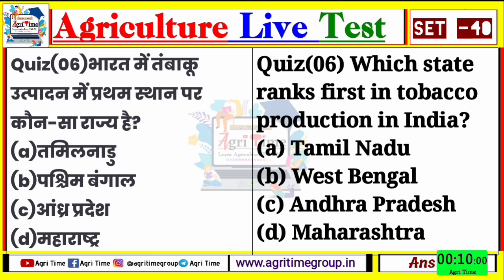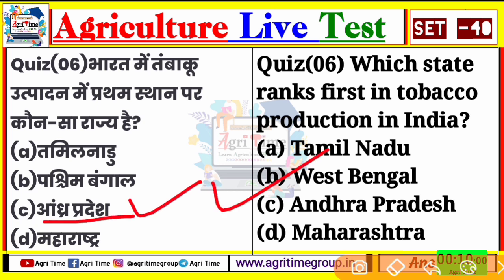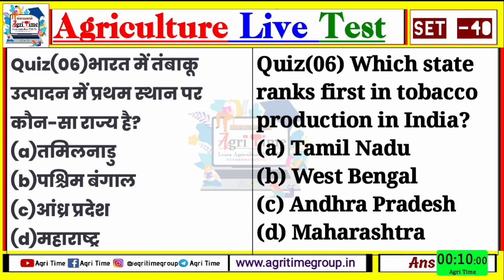Quiz number 6 का जिनों ने भी C answer comment किया, उनका answer right आया - आंध्रप्रदेश। अभी मैंने quiz 5 में बताया था कि आंध्रप्रदेश और गुजरात भारत में तम्बाखू के दो सबसे बड़े राज्य हैं उत्पादन के क्षेत्र में। Options में गुजरात तो है नहीं, इसलिए आंध्रप्रदेश ही right answer होगा। इस तरीके से questions में ही answer छुपा रहता है।